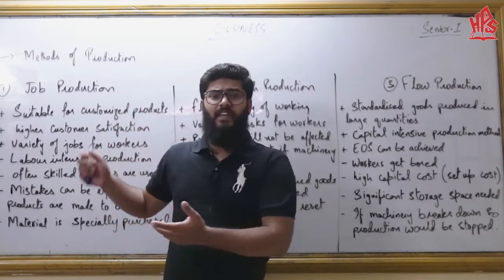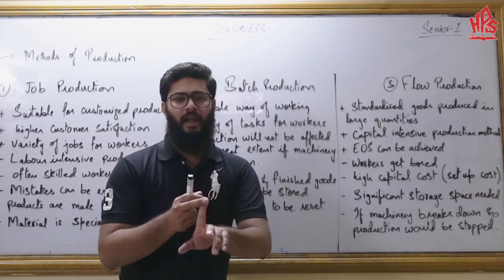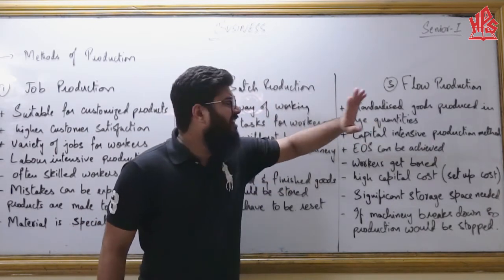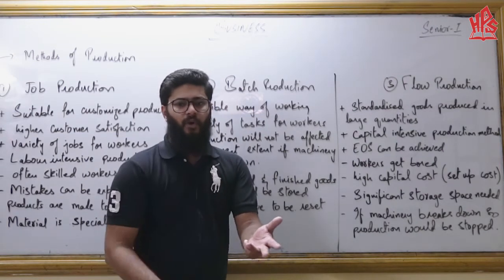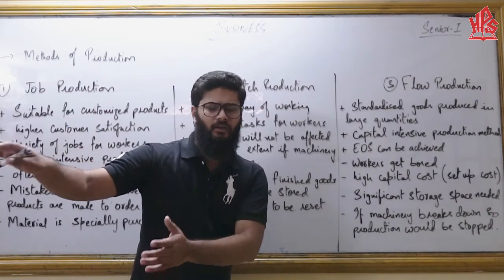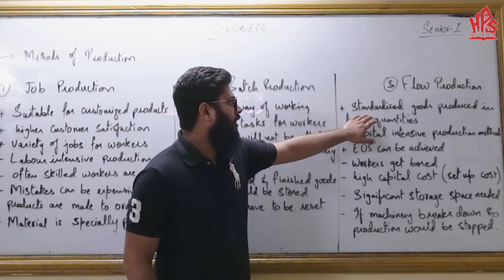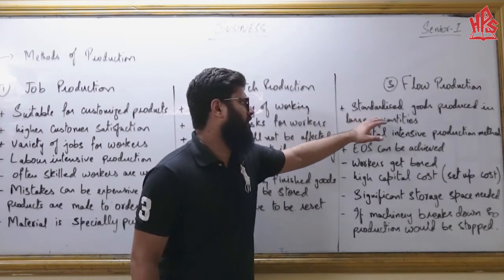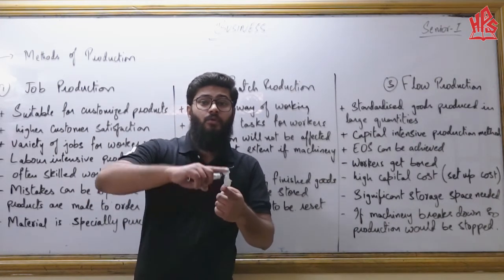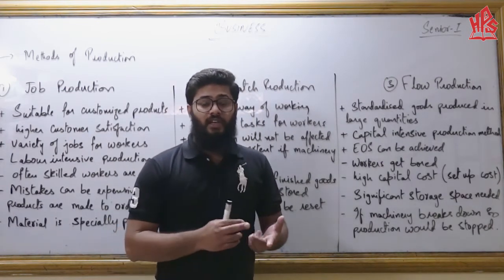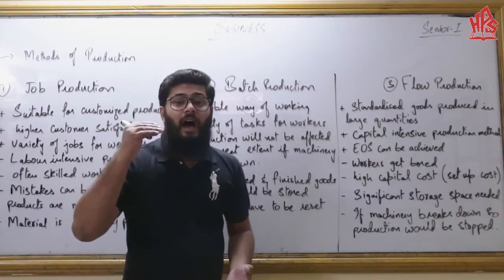Examples of standardized goods include beauty soaps like Lux and Dove, detergents like Surf Excel, Ariel, and Bonus — all already available in the market. If goods are produced in large quantities, large-scale production takes place, and businesses are likely to achieve economies of scale, reducing average cost and potentially increasing profitability.